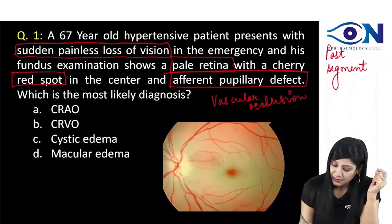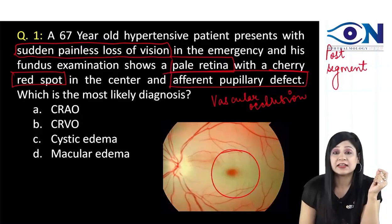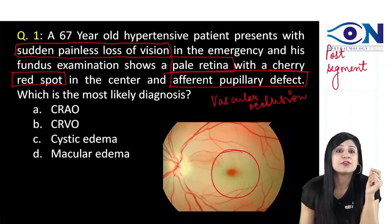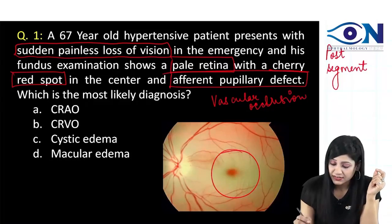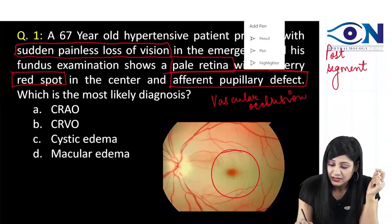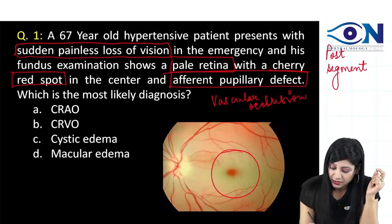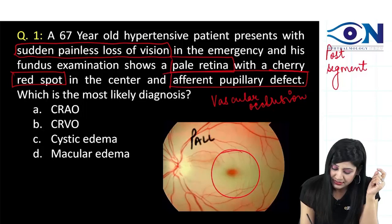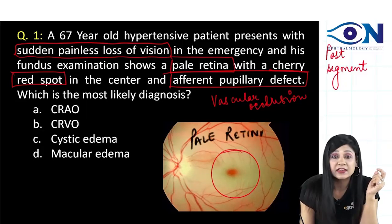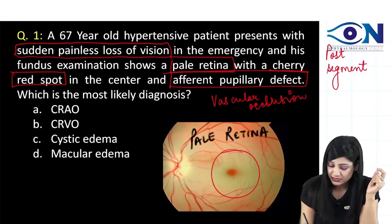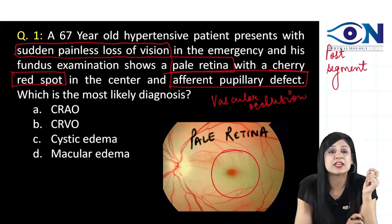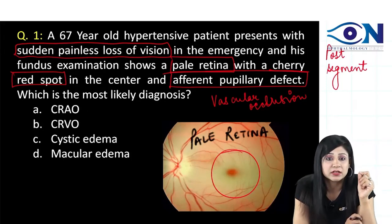You can see in the image there is a pale retina along with a cherry red spot. Here, this is the pale retina, and this one is the cherry red spot.